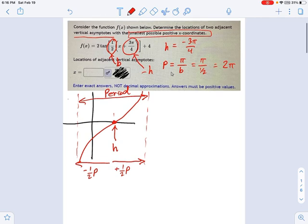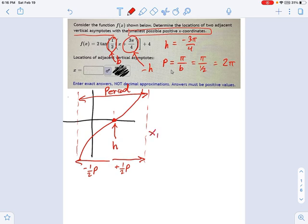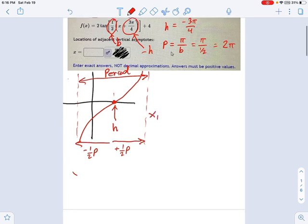So now we'll figure out the location of this asymptote. I'm going to call that x₁. I'm going to say x₁ equals h, the center of the tangent, plus one-half the distance between asymptotes. And that's just going to be negative 3π over 4 plus 2π. Well, I need common denominators. So let's not talk about 2π. Let's do 8π over 4. That's the same thing. I multiply top and bottom by 4.